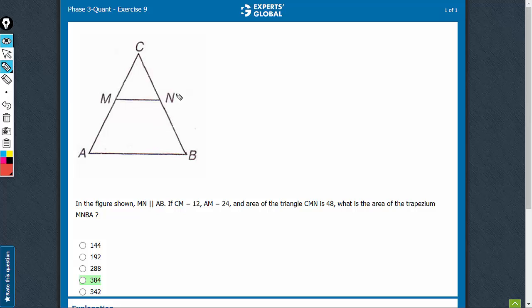The two lines are parallel and then it's given that CM is 12, AM is 24, CMN is 48 in area. What is the area of this trapezium?